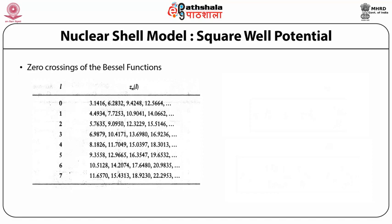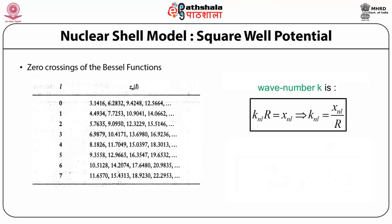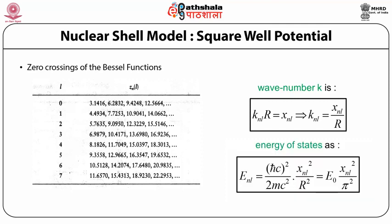If we arrange these in terms of x value, first we define the wave number k: k_nl · R = x_nl implies k_nl = x_nl/R, and the energy of the state is E_nl = (ħc)²/(2mc²) · x_nl²/R² = E₀ · x_nl²/π².